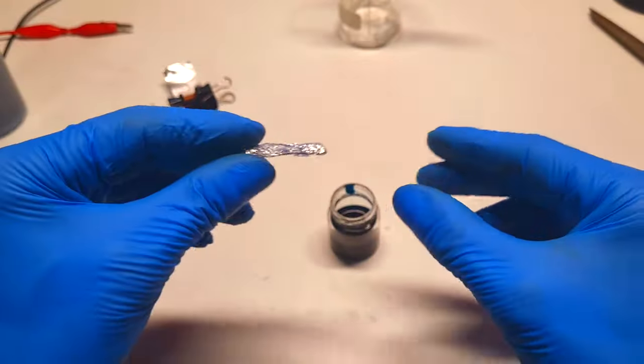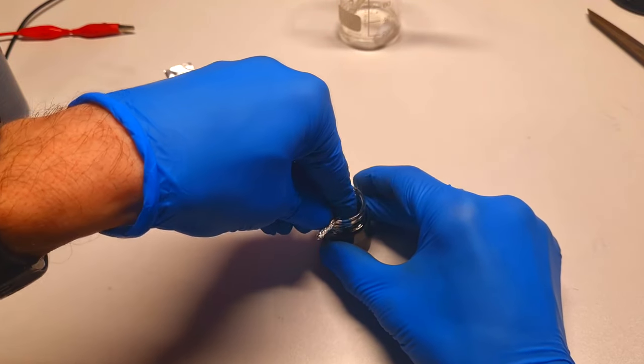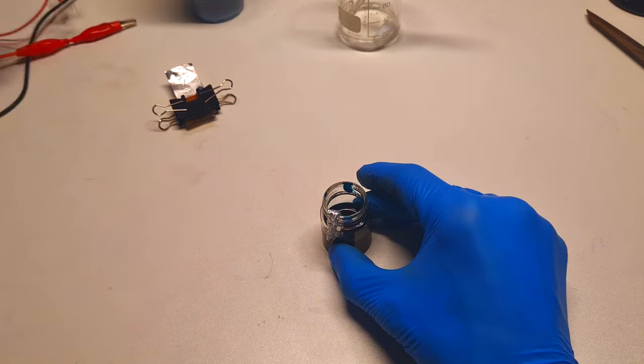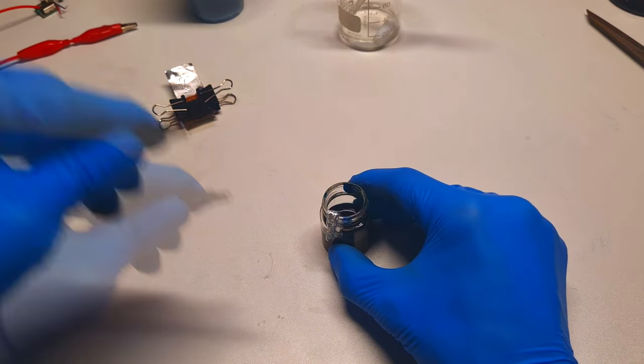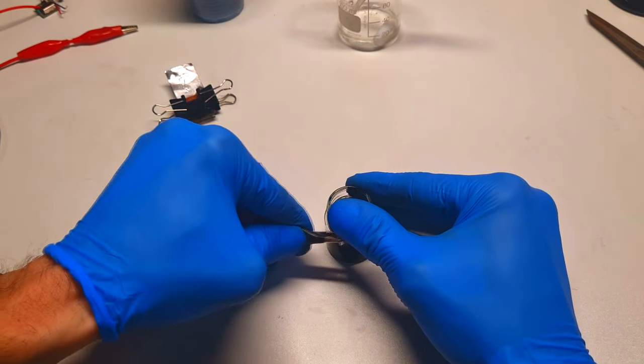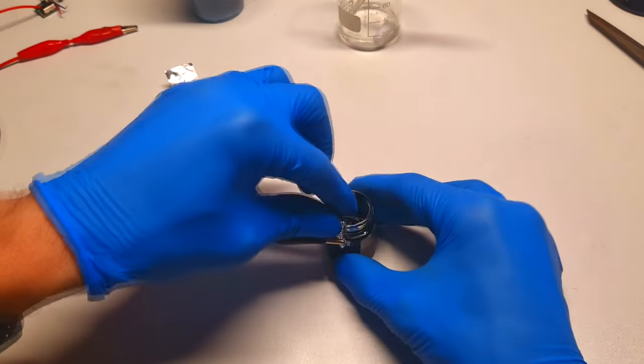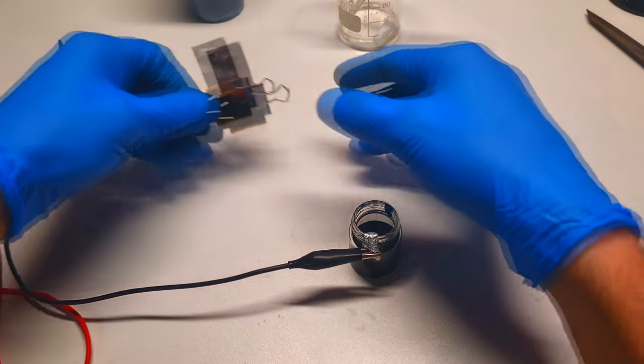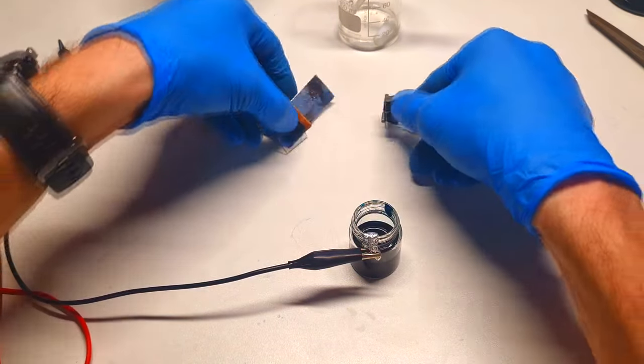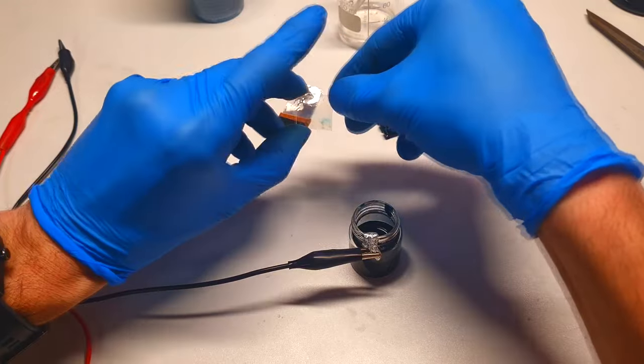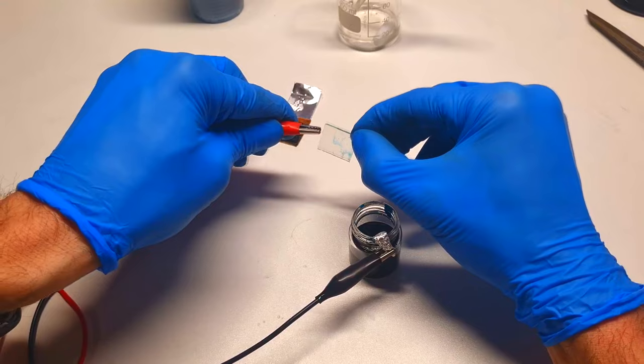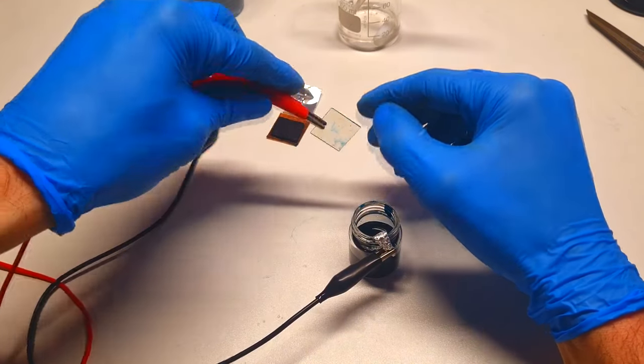Here I have some aluminum foil. This will be my negative electrode. This is great.